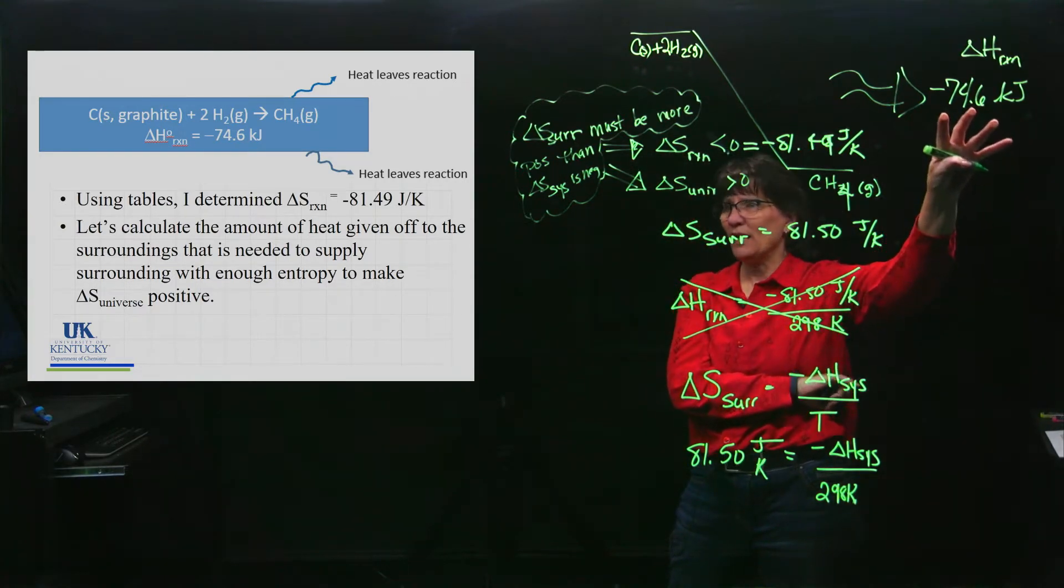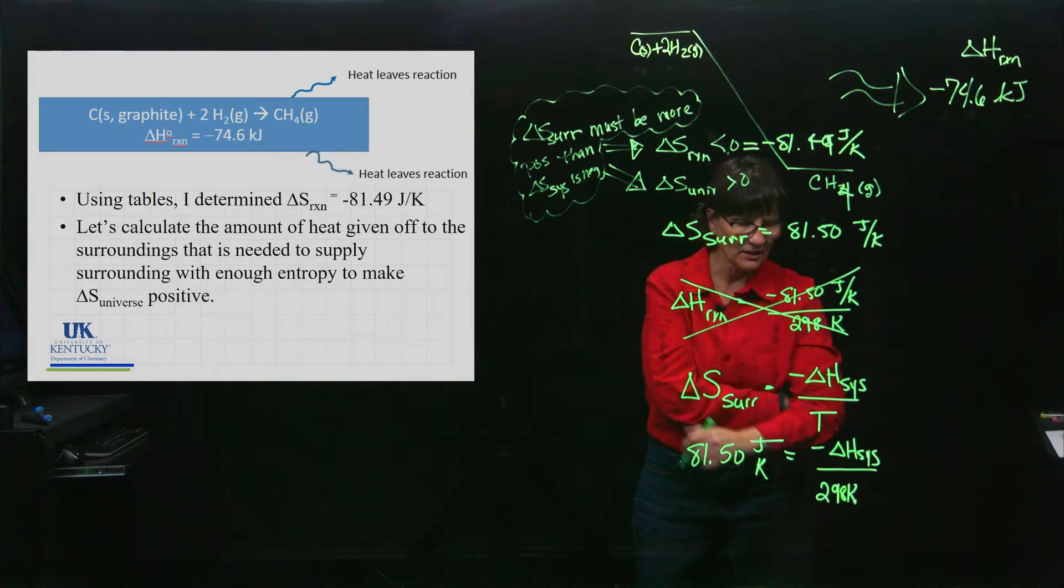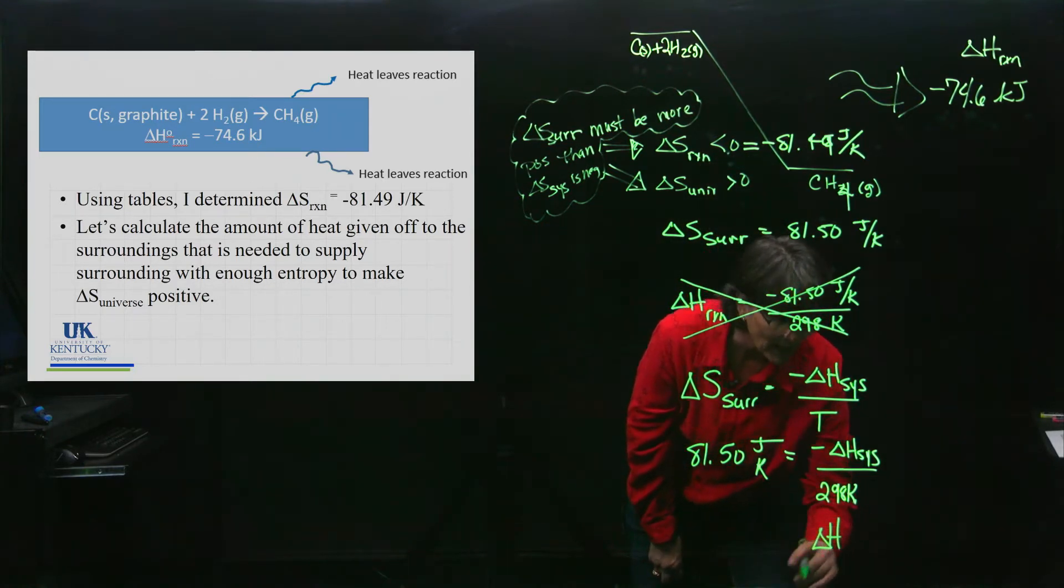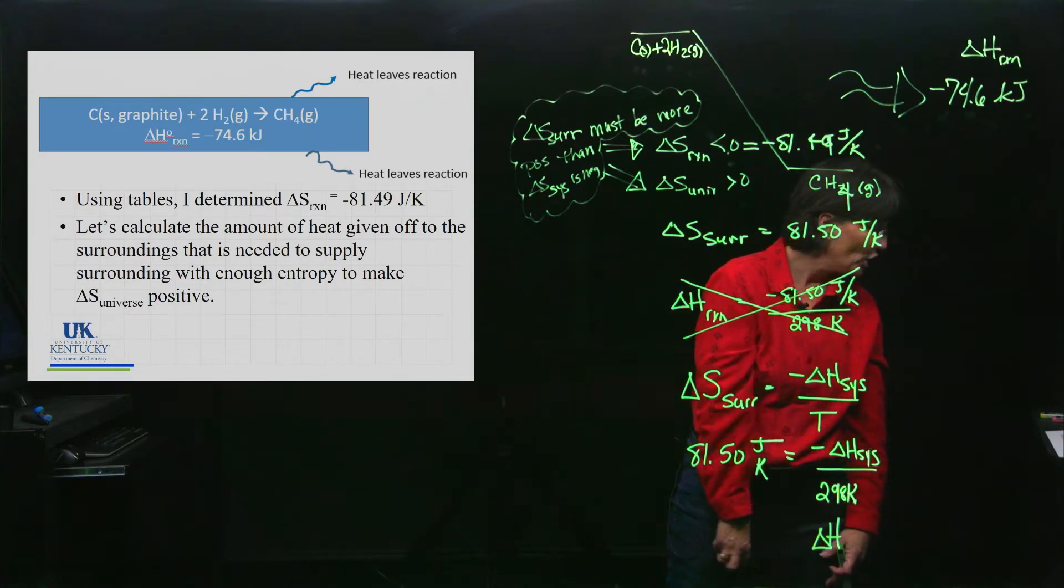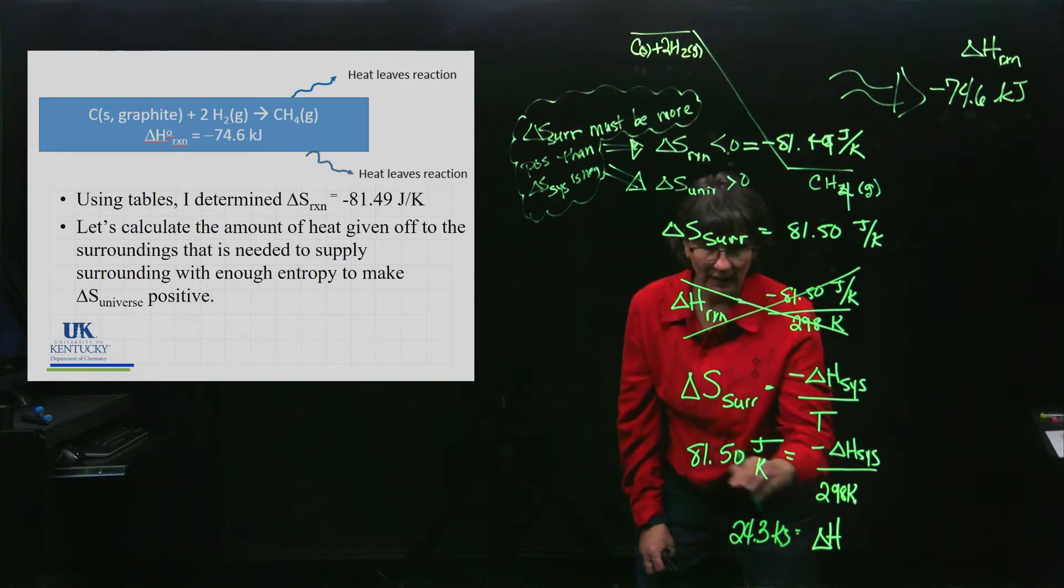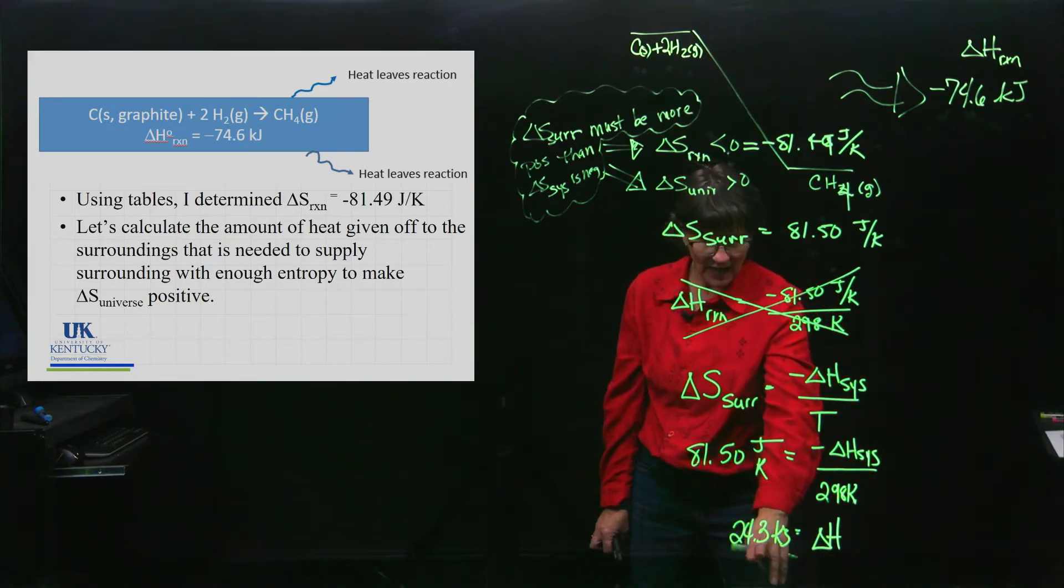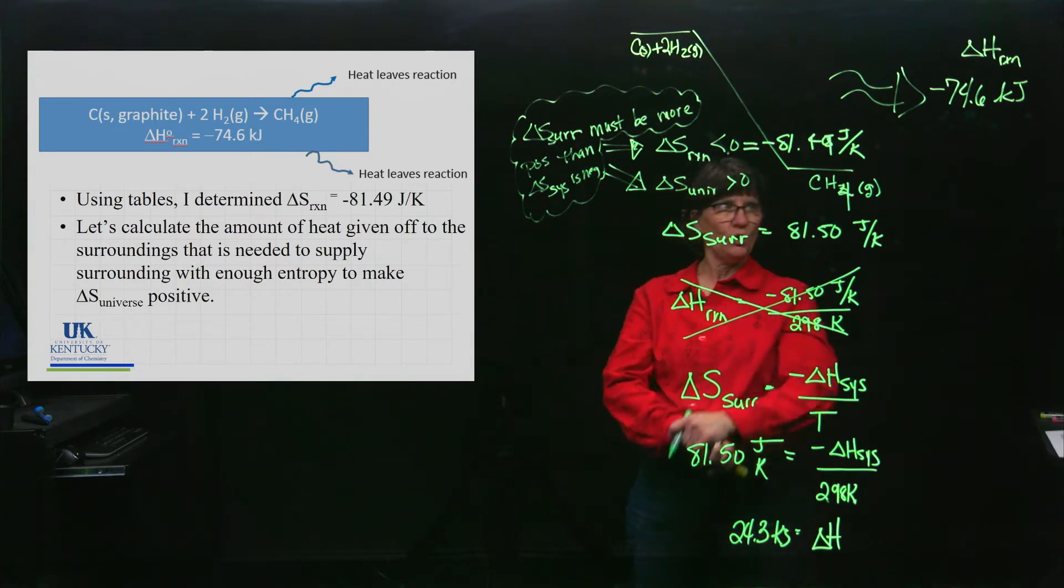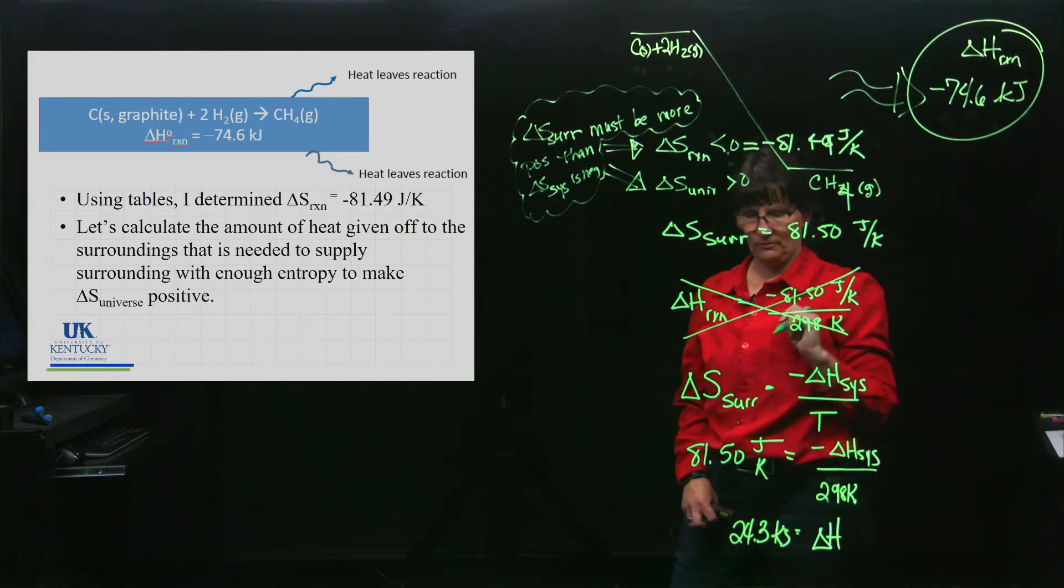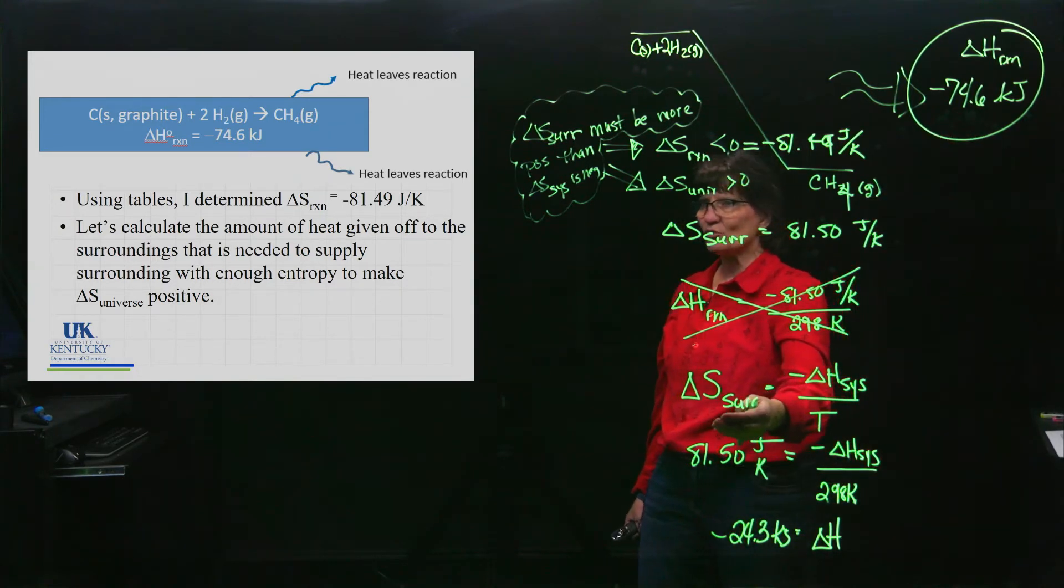I don't need all of this to get enough entropy of my surroundings. When I calculate the ΔS of the system that I need, how much of that ΔH of that reaction I'm going to need, I find that I only need 24.3 kilojoules. I took this times this, converted from joules to kilojoules, and I only need to use 24.3 of them to make my surroundings disordered enough.